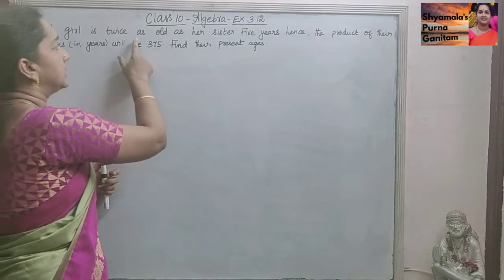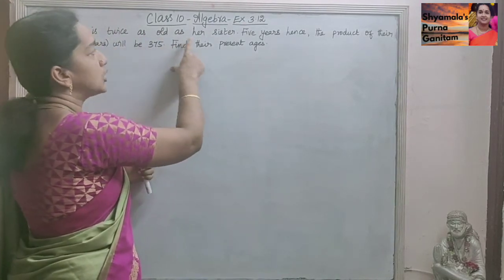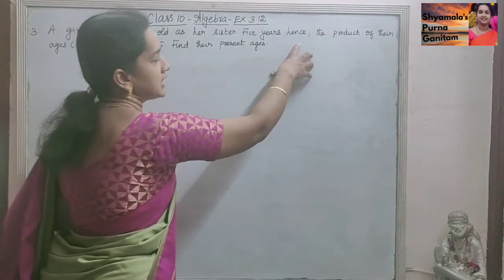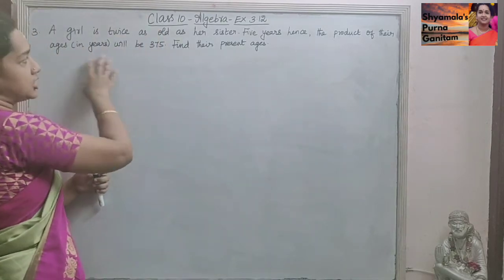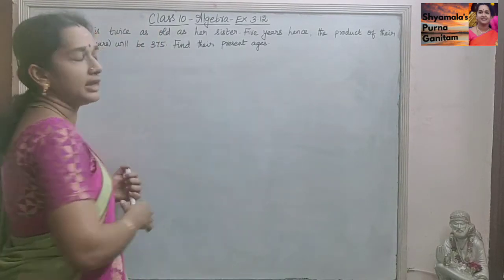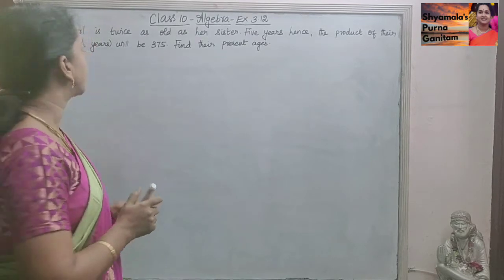Third sum: A girl is twice as old as her sister. 5 years hence, the product of their ages will be 375. Find their present age.